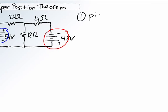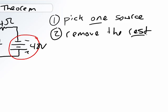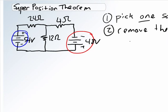Step two, remove the rest. I don't know how many there are of the rest. In this case, there's only two sources, so you've got to just pick one and remove the other one. How do you remove it?